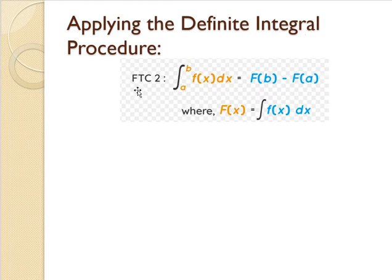We will be using the formula which is the fundamental theorem of calculus 2, the second fundamental theorem of calculus, which is this one. The definite integral from A to B, A is the lower limit and B is the upper limit of f of x dx is equal to big F of B minus big F of A, where F of x equals the integral of f of x dx.